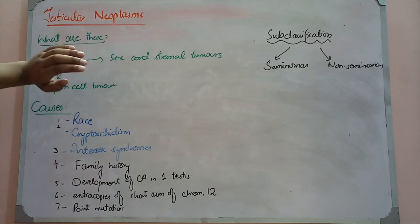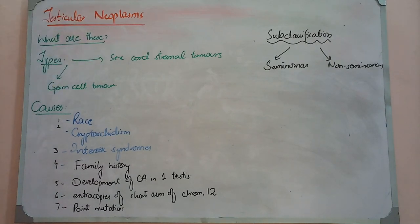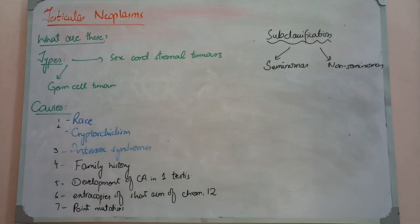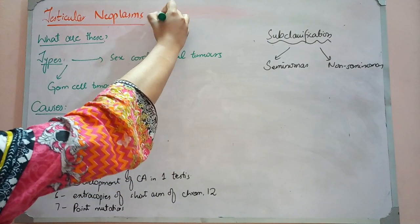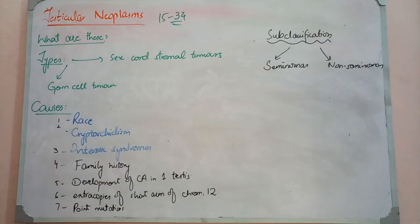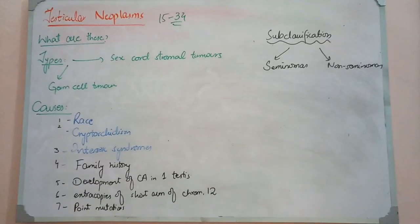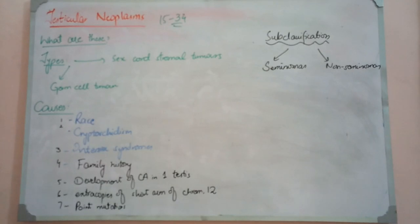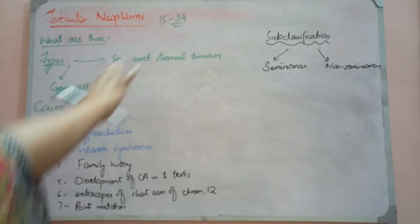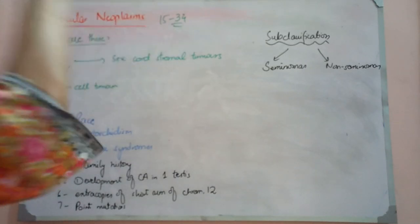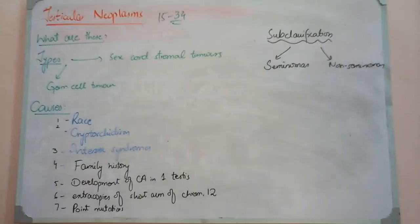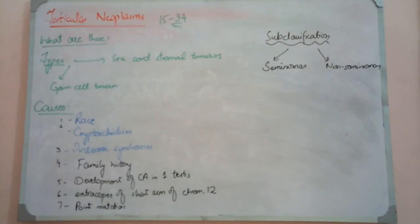Testicular neoplasms are not that uncommon. We say that cancer is an adult age disease, but in the age group of 15 to 34 years, it is also common in such young age. It is important to remember that testicular cancer is not limited to old age.